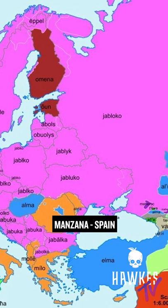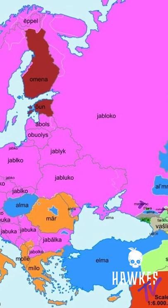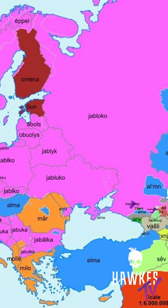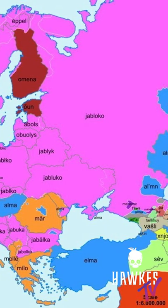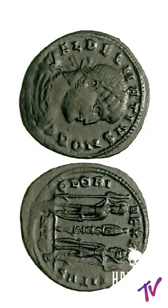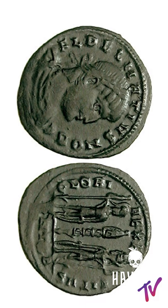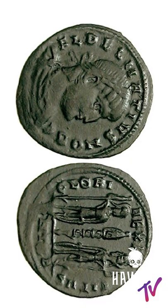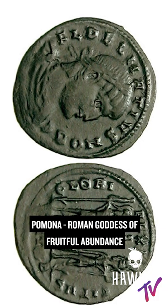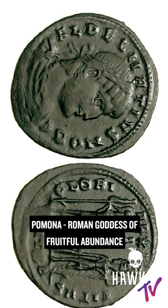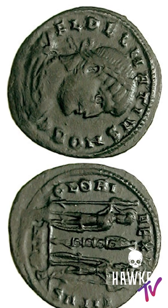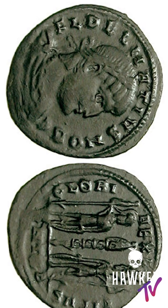'Manzana' in Spanish comes from the Iberian pronunciation of the Latin 'matianium,' a word referring to a sweet-smelling golden apple that Matius, a friend of Caesar, raised. In French, 'pomme' is clearly directly linked to the Roman goddess of fruitful abundance, Pomona. Her name comes from the Latin word 'pomum,' specifically meaning orchard fruit.